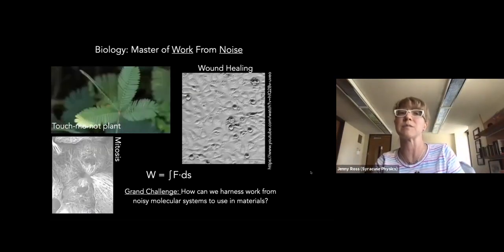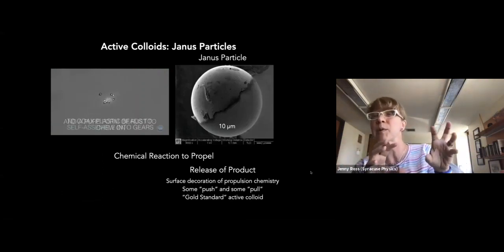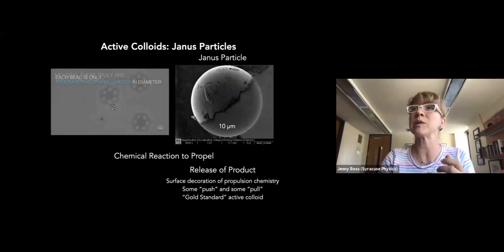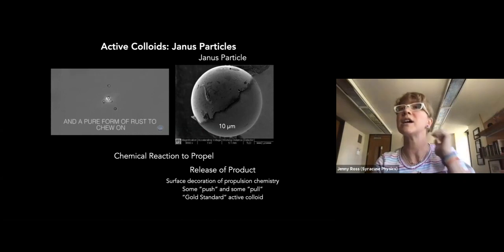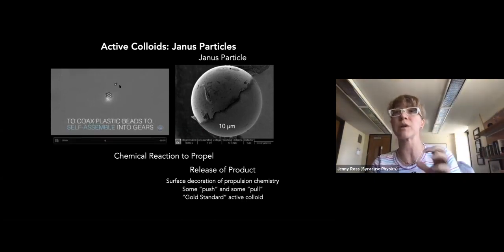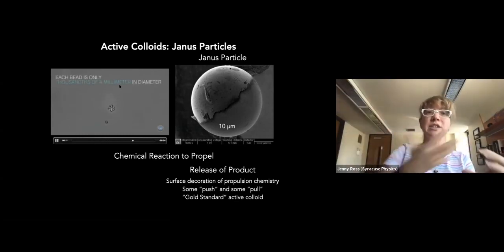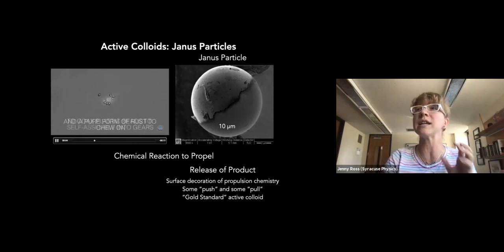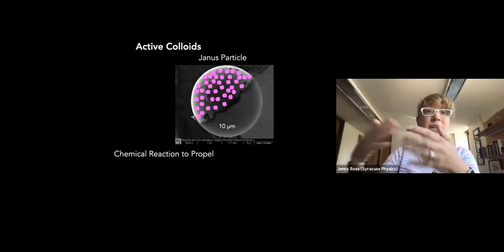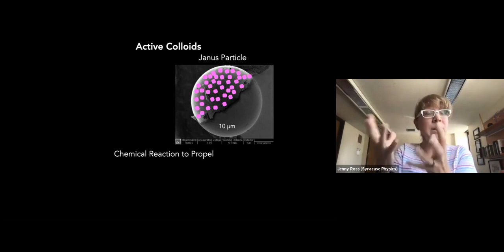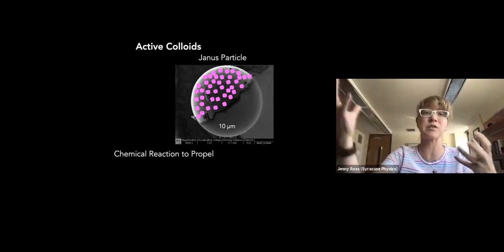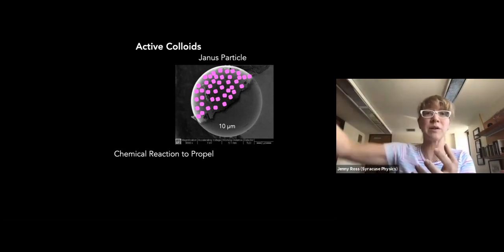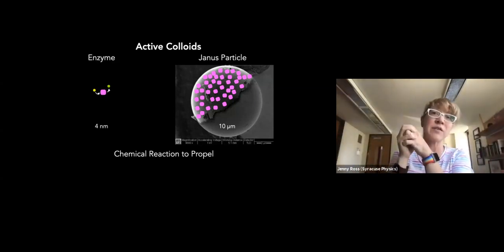Looking at the gold standard — Janus particles for active matter — these are half-coated with something that can do a chemical reaction and cause propulsion. Some push, some pull. One cool thing is you can coat Janus particles with enzymes and get the same kind of propulsion. Enzymes are performing chemical reactions much like the chemical reactions painted on with metal ions — now we can do this with enzymes. The question is: can we scale this down? Can a single enzyme be an active matter particle?